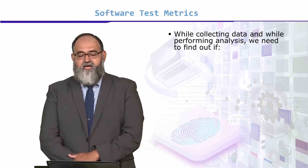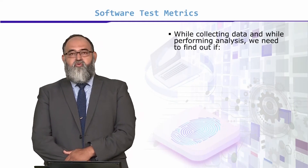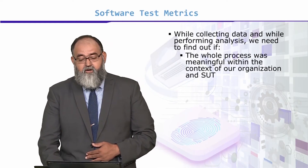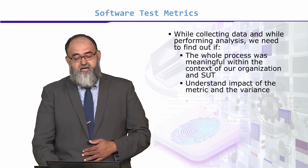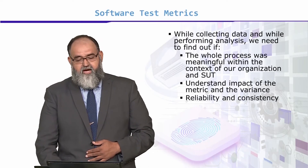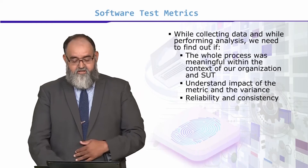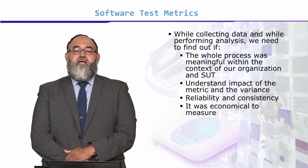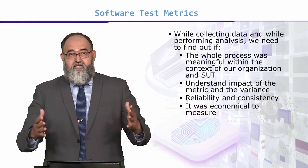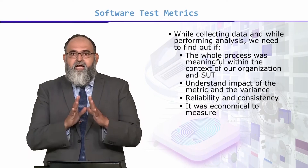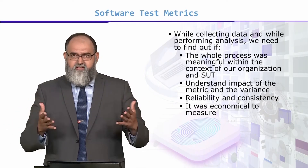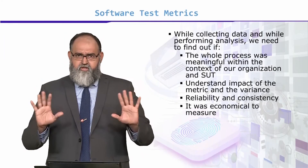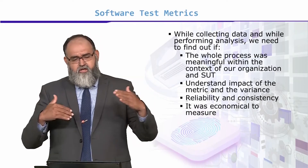While collecting data and performing analysis, we need to find out whether the whole process was meaningful within the context of our organization. We need to understand the impact of metrics, variance, reliability, and consistency. We need to see from different measures and find out which activities converge — because if they are diverging, or neither converging nor diverging, this means it's not a good amount of progress toward production.